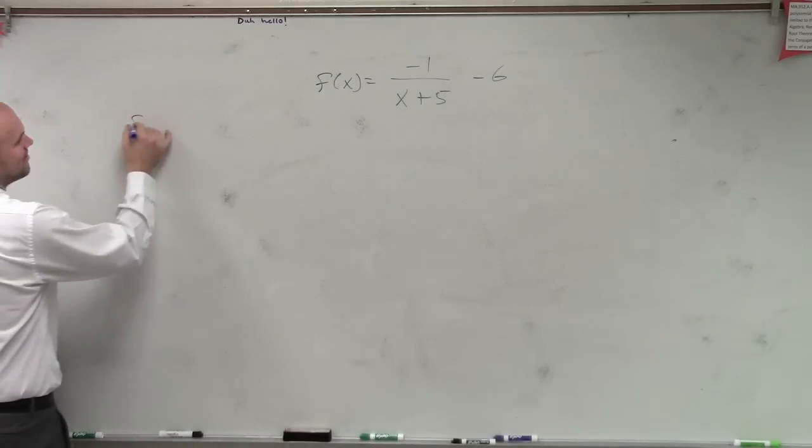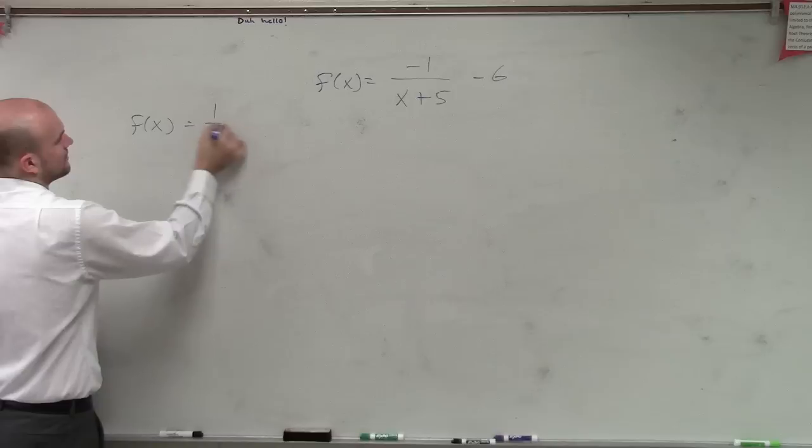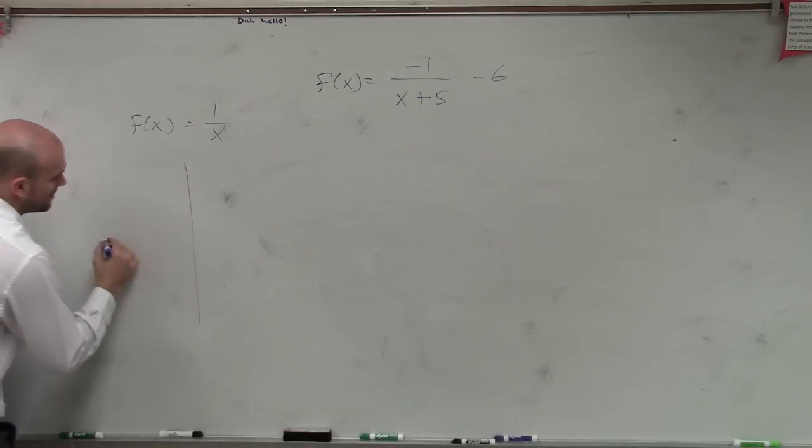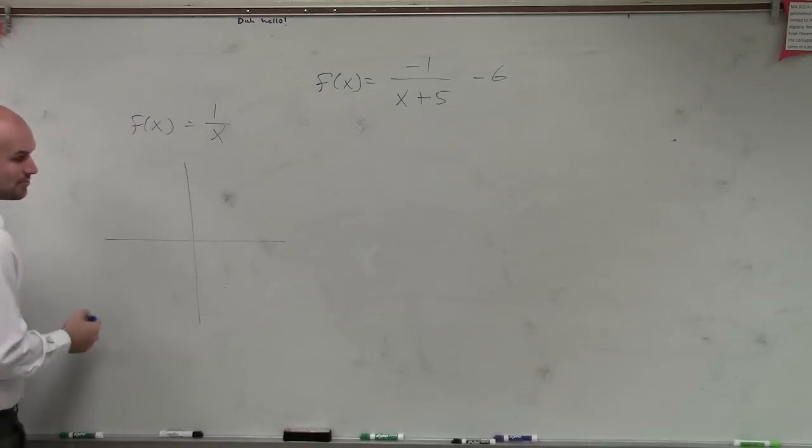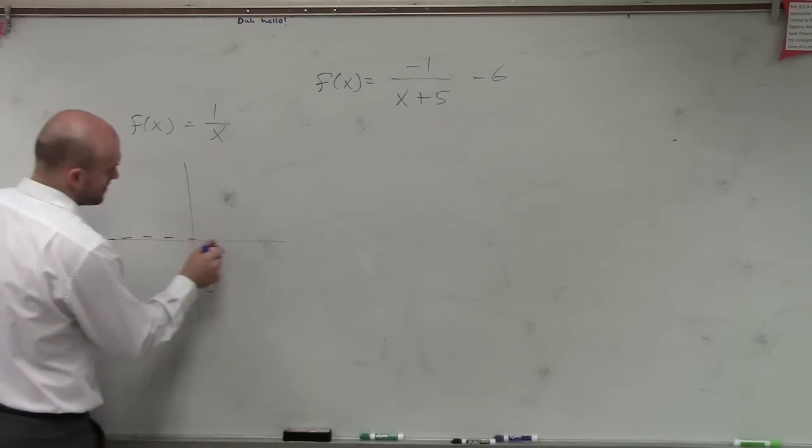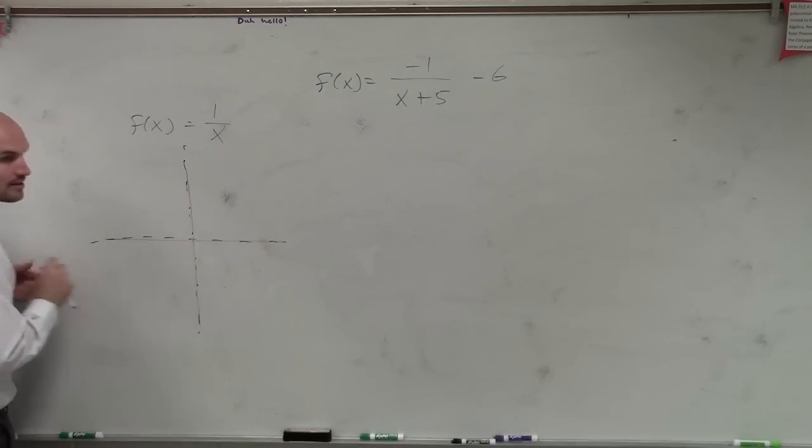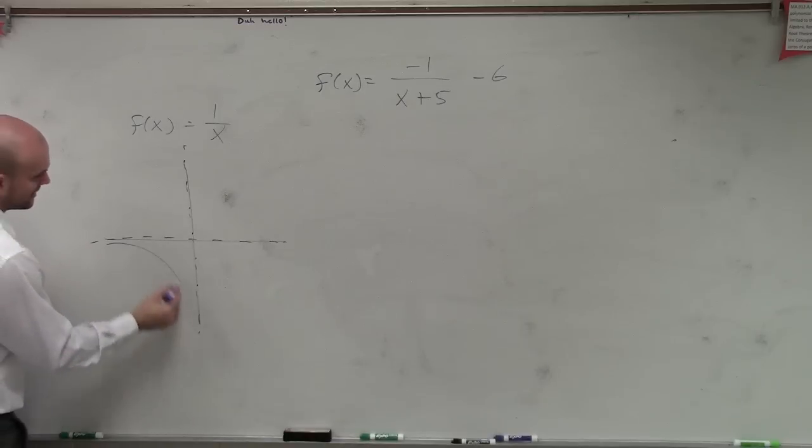But as long as I can remember what the parent function is, remember the parent function has two asymptotes. One asymptote is at y equals 0, the other asymptote is at x equals 0, and the parent function looks something like this.